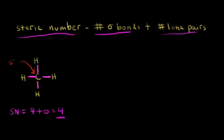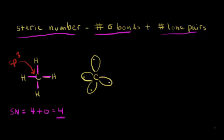So this carbon is sp3 hybridized. We draw in those four sp3 hybrid orbitals for that carbon, and we have one valence electron in each of those four sp3 hybrid orbitals. Hydrogen has one valence electron in an unhybridized s orbital. So we draw in our hydrogens, and this head-on overlap is, of course, a sigma bond.